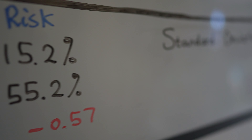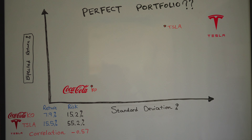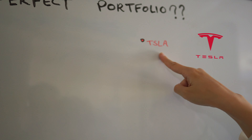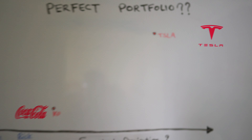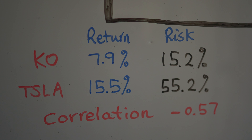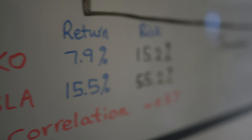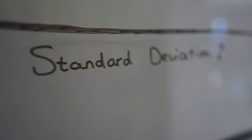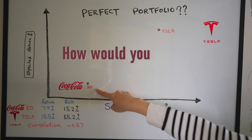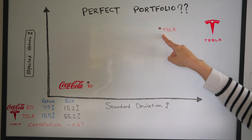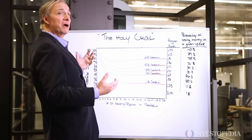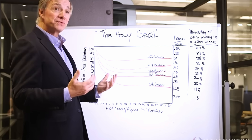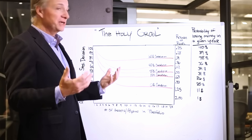A lot of people think that the most important thing you could do is find the best investments. That's important, but there is no great one best investment. The simple thing is to find 15 or 20 good uncorrelated return streams. That's the power of portfolio construction and the power of diversification.